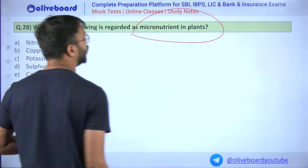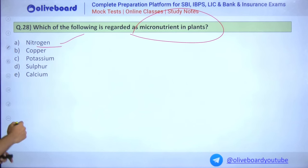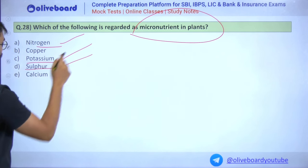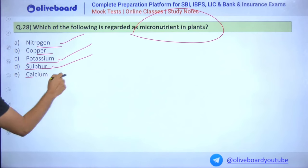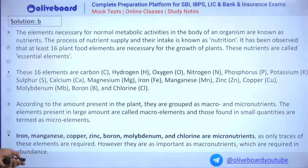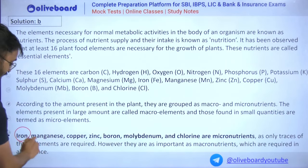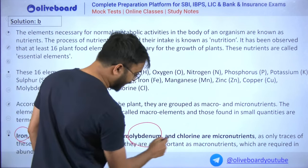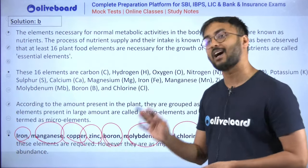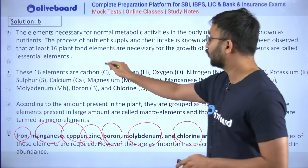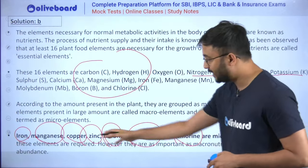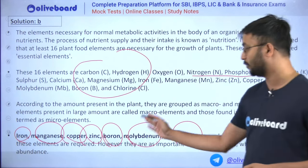Question 28: Which is regarded as a micronutrient in plants? Nitrogen, potassium, and sulphur are macronutrients. Calcium is also a macronutrient. Copper is a micronutrient — answer is B. Important micronutrients: iron, manganese, copper, zinc, boron, molybdenum, and chlorine. All other elements — carbon, hydrogen, calcium, magnesium, nitrogen, phosphorus, potassium, sulfur — are macronutrients.